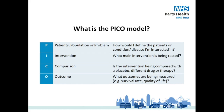P stands for the patients, population, or problem being studied. I refers to the intervention being tested. C is for comparison — it can be a placebo, a different drug, or therapy approach. And O relates to the outcomes being measured.